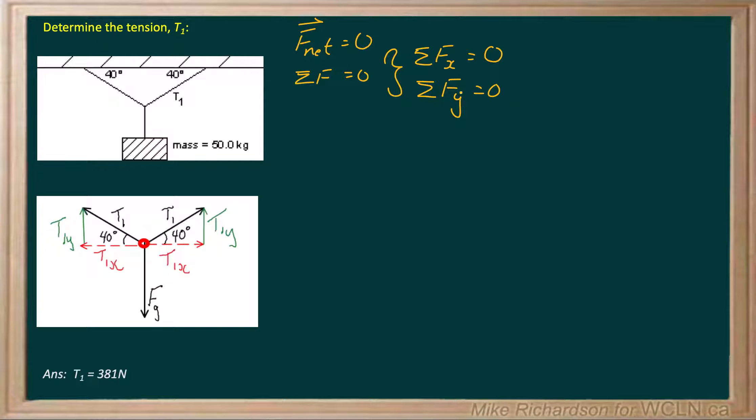So we're going to use components for this question. Now the reason I'm choosing components is because I already see from the question we've got a lot of symmetry. Both cables are at 40 degrees, so they're both going to be under the same tension, and the mass is hanging straight down. So components, from my experience, will be a lot quicker for this particular question.